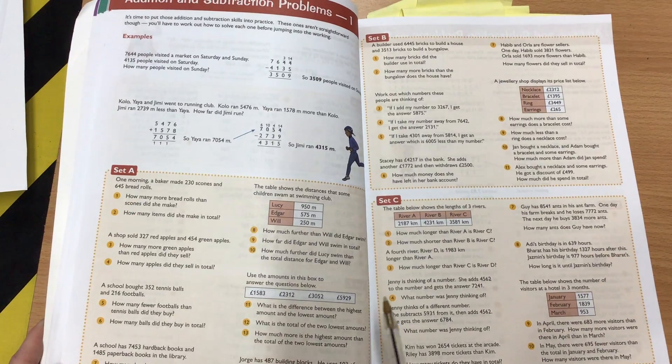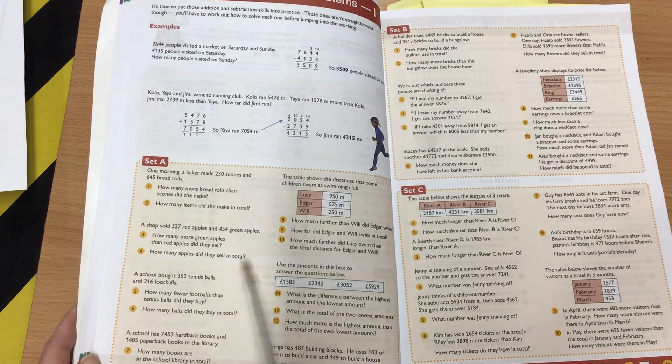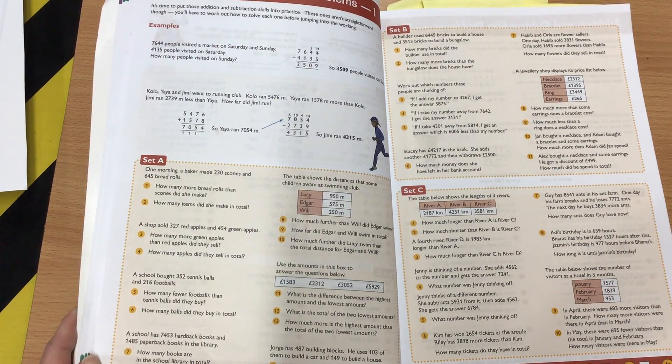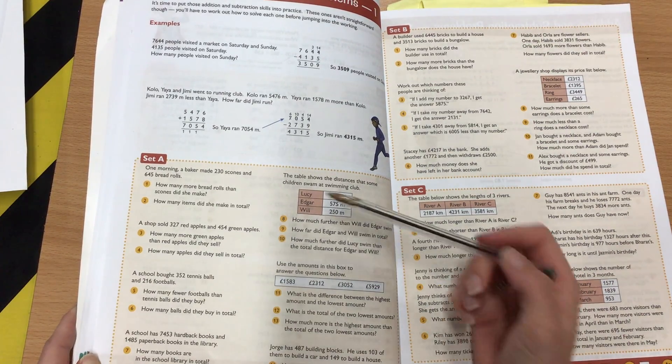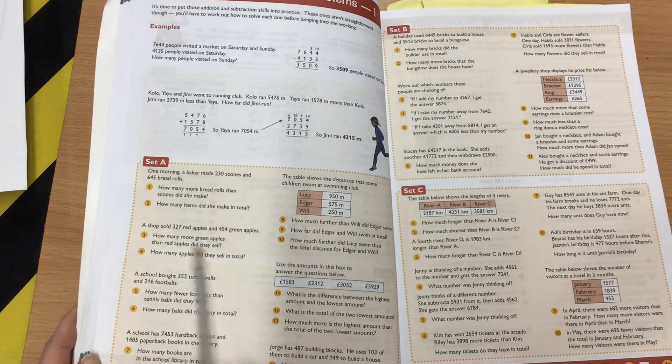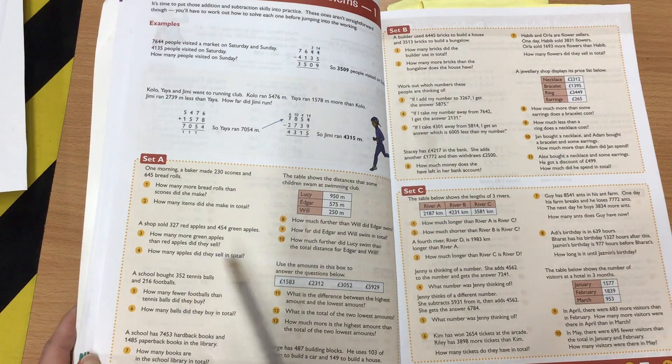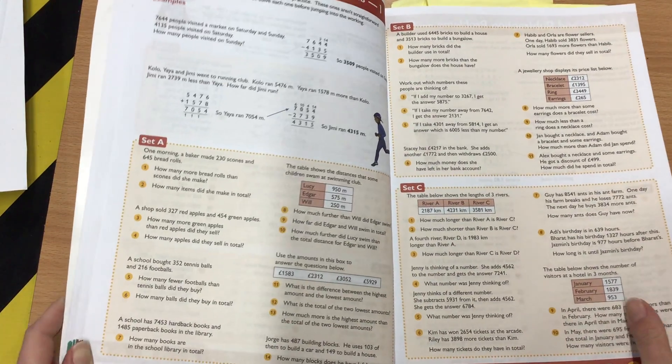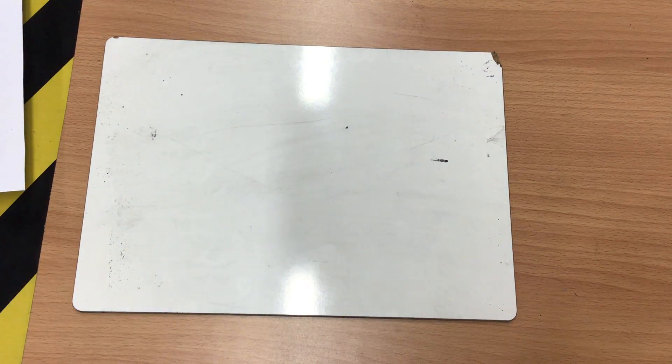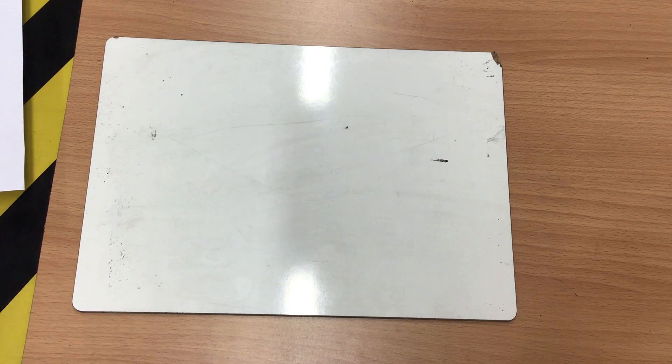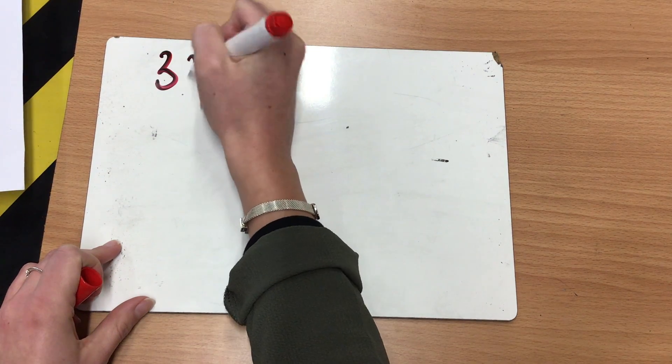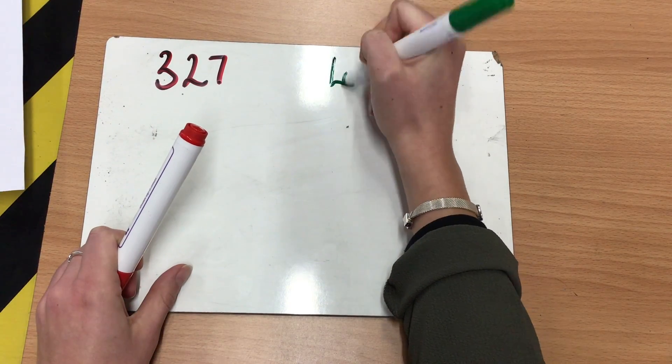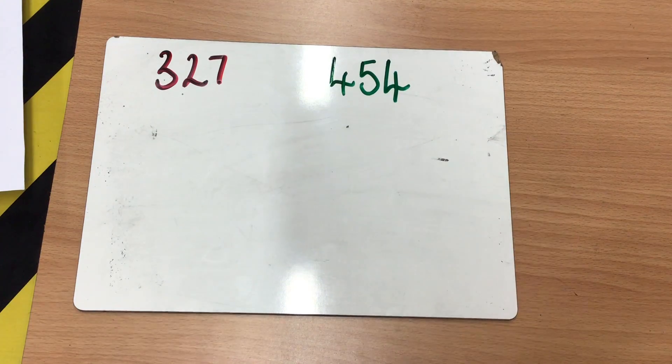So we're going to look at set A first. And I'm actually going to look at three questions. I'm going to look at question three and four, because although there's two questions here, they're answering one problem. So it says a shop sold 327 red apples and 454 green apples. So this is a two-step word problem because question three would be step one. And then this bit is the second part to that question. So first of all, I need to find out how many more green apples than red apples did they sell. So what we usually do in class is I'm just going to draw something out to help me solve that problem. So I know I've got 327 red apples. So I'm going to write that in red. And I've got 454 green apples. They're the numbers that I need.